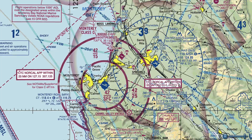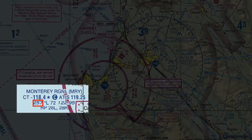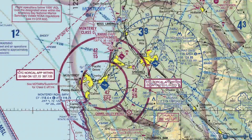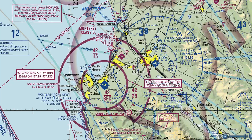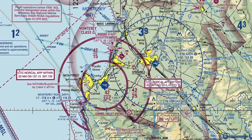We notice this difference in shelf bottoms, and that's because the height MSL of the actual airport is 257 feet. Charlie airspace is controlled airspace, and you will need ATC authorization when flying within it. Generally, Charlie airspace is from the surface to around 4,000 feet mean sea level, but that can change depending on the altitude of the airport and other factors.